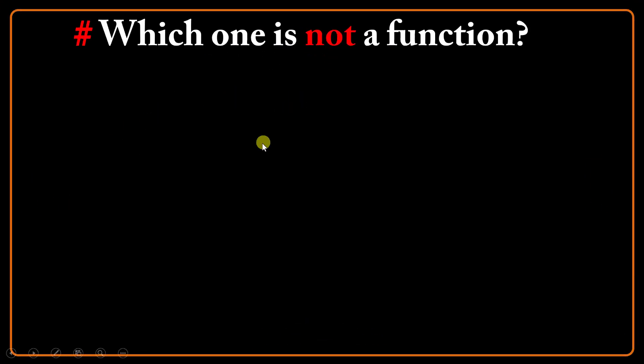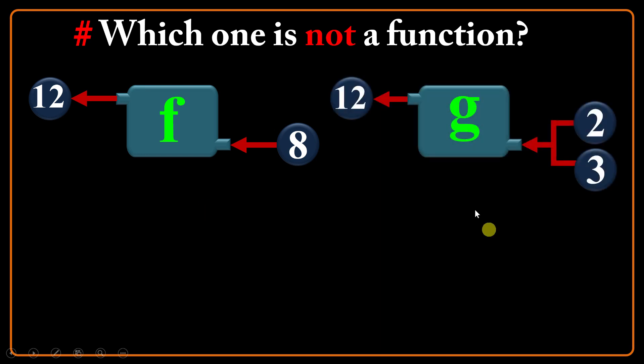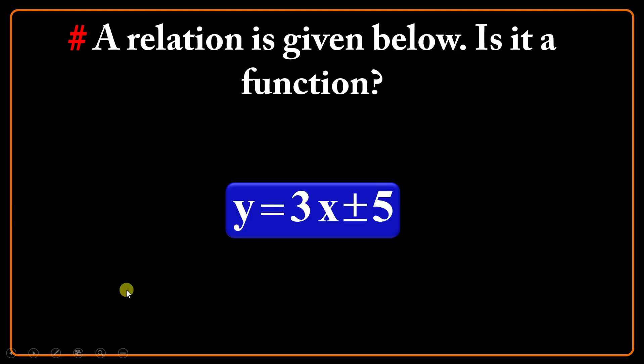Which one is not a function? Suppose that f is given like this: for the input of 8 we have got 12. Yes, it is function because we have a single output for this input. What about g? For the inputs of 2 and 3, I have got just 12. Yes, it is also regarded as a function. It's no problem that for different inputs, g may generate just one output. What about h? We have got 7 for the input, but it generates 2 outputs. No, it is not a function at all.